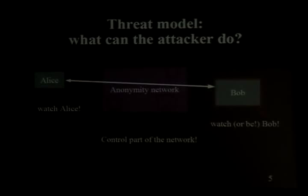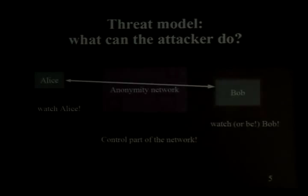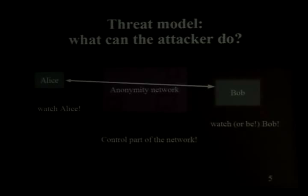From the threat model perspective: Alice is trying to browse the web, and the adversary could be watching Alice — maybe her ISP, the Tunisian telephone company, or Starbucks. Or the adversary could be watching Bob, maybe monitoring indie media, Gmail colluding with China, or WikiLeaks. Or the adversary is Bob himself — CNN.com wanting to know all their users to advertise better. Or the adversary is somewhere in the middle, like AT&T or some large backbone provider.